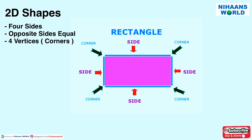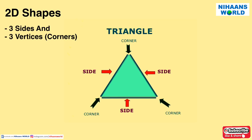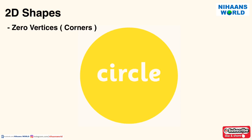A rectangle has four sides. The opposite sides of a rectangle are equal, and it has four vertices. A triangle has three sides and three vertices or corners. A circle has no vertex; it is a closed loop.